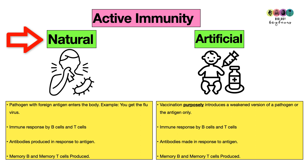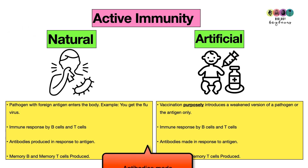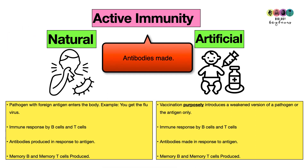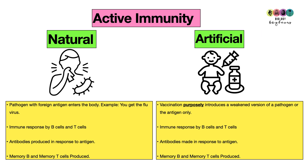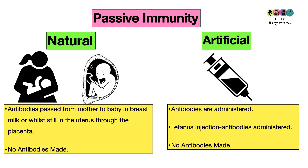Active immunity can be natural or artificial. Natural active immunity means your body is induced to make antibodies because you've caught the flu or some pathogen has entered your body. Artificial active immunity means you've been made to produce those antibodies artificially — because you've been vaccinated.